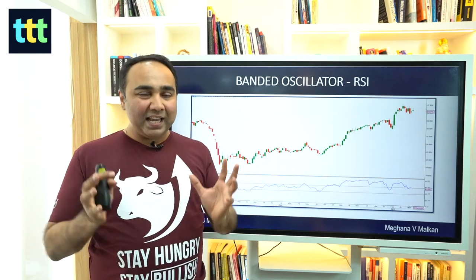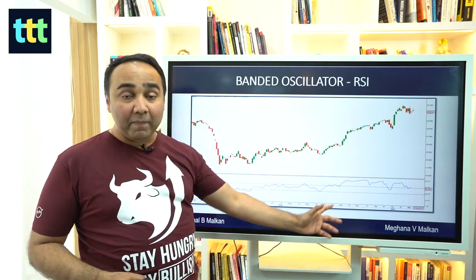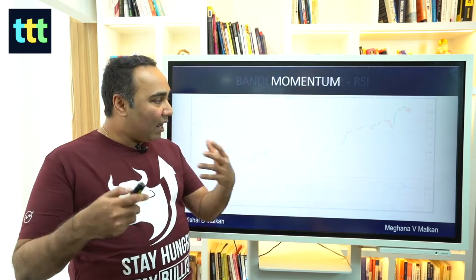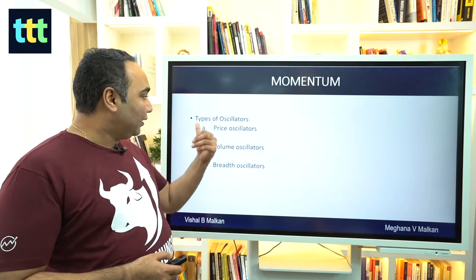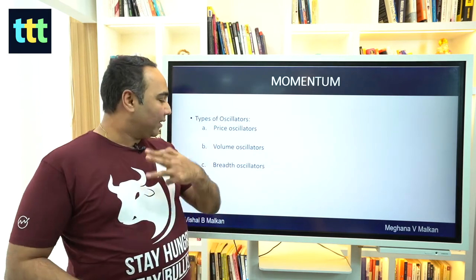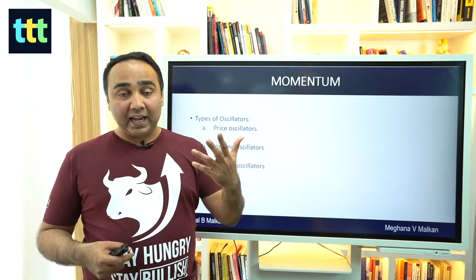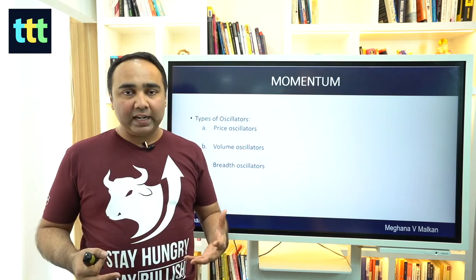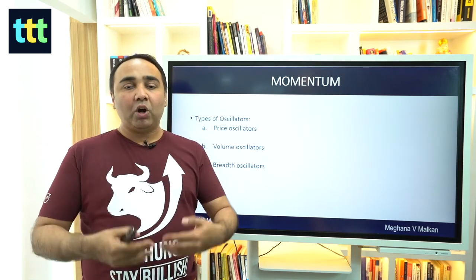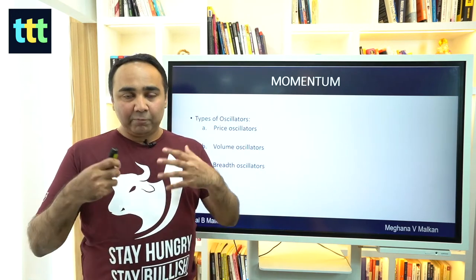Let's first understand the basic principle of momentum and where it is derived from. It can be derived from price or from volume. There are three types of oscillators: the price oscillator, the volume oscillator, and the breadth oscillator. RSI, Stochastic, and MACD are all price oscillators — the calculation is done on price. If the price moves up, the oscillator moves up; if the price moves down, the oscillator moves down.